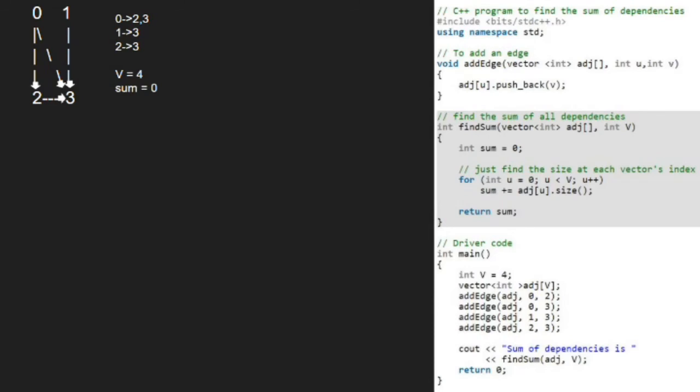So first, u will be 0. Since the size of adjacency list of 0 is 2, we add 2 to sum. Hence, now sum will be equal to 2.